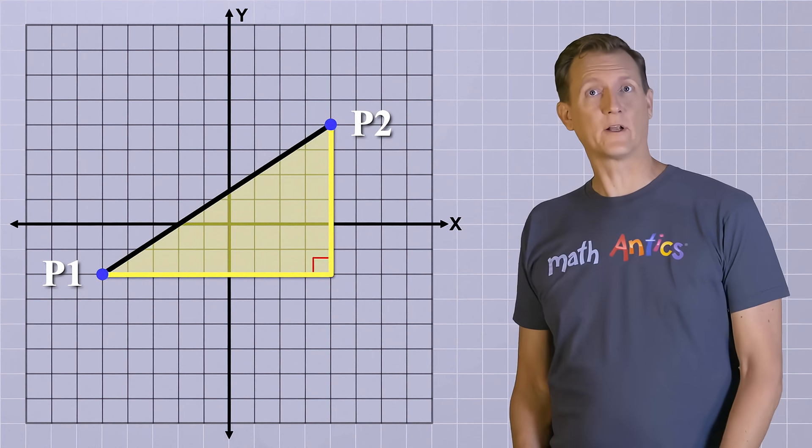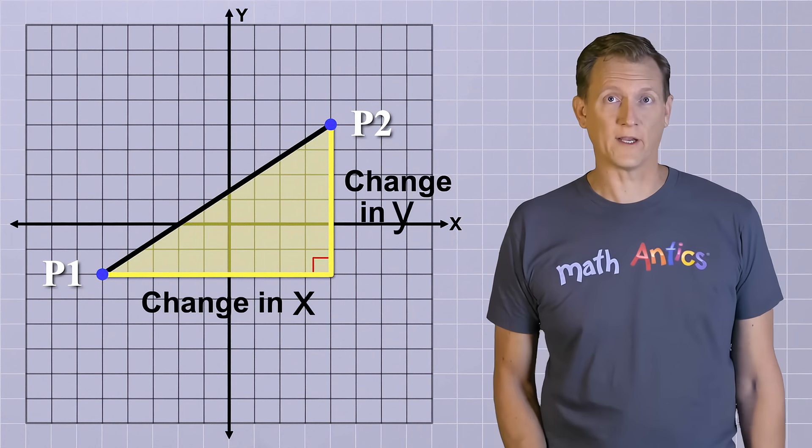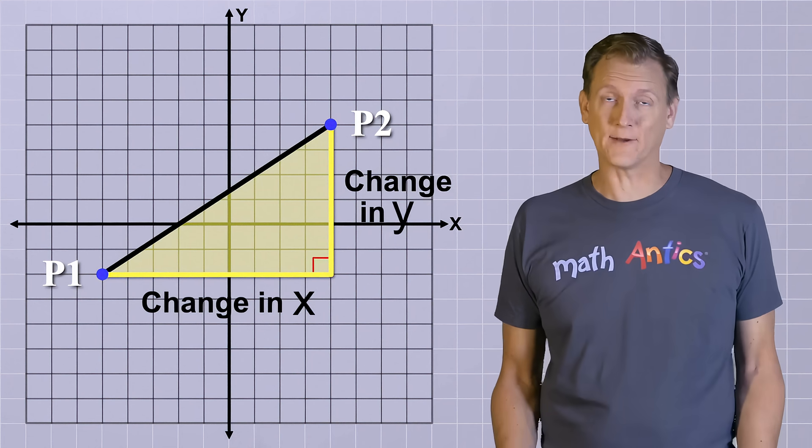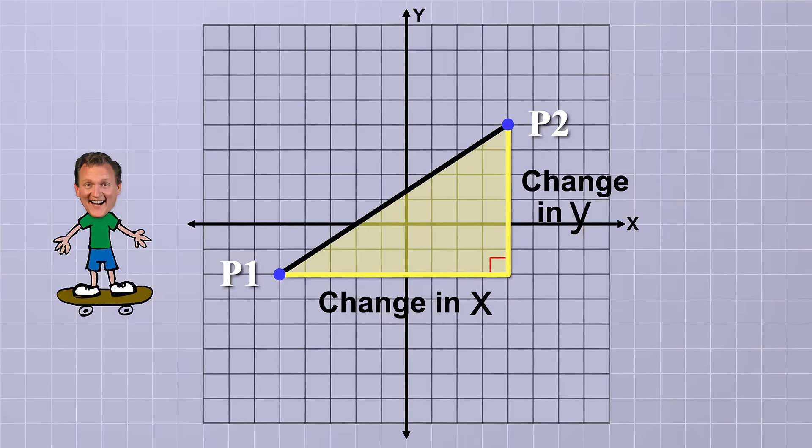Temporarily, we're going to call the horizontal side of the triangle change in x and the vertical side change in y, which are awkwardly long names, but that's exactly what the two sides represent. Imagine starting at point 1 and then slowly moving along our line segment towards point 2. As you do that, the x and y coordinates that you're located at are changing, right?